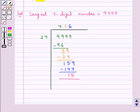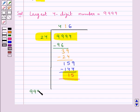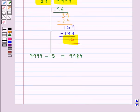When we divide 9999 by 24, we get a remainder of 15. Now, we subtract 15 from 9999, which gives us 9984. This number, 9984, is divisible by 24.